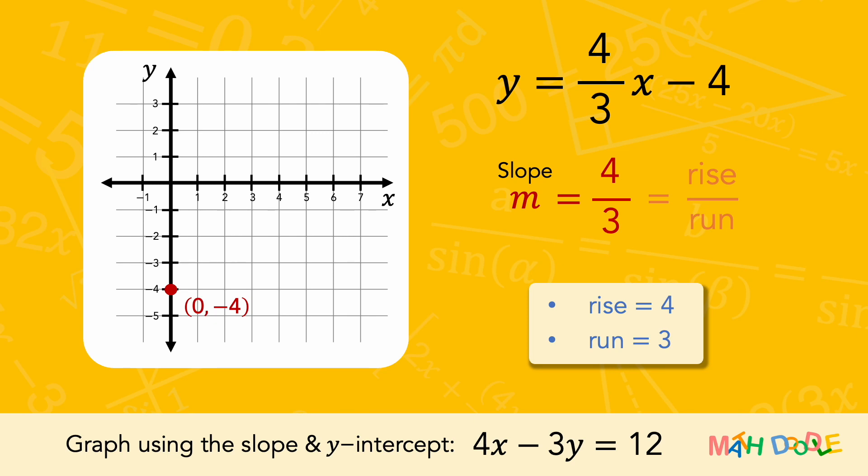Now, let's count the rise and run in a coordinate system, starting at the y-intercept. Up 4 units, and then right 3 units. Then, let's draw a line through these points and put arrows on both ends of the line. And this is the line of 4x minus 3y equals 12.